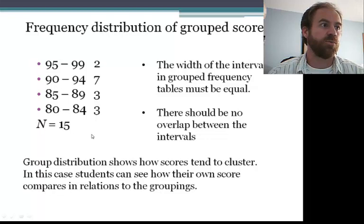So in this case, we grouped them into groups of four and we showed how many scores occurred in each group. And again, our number of scores is 15.